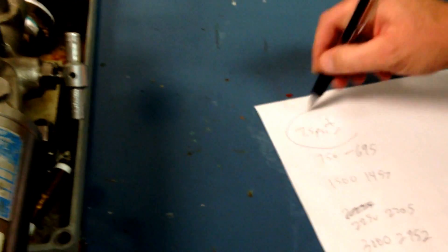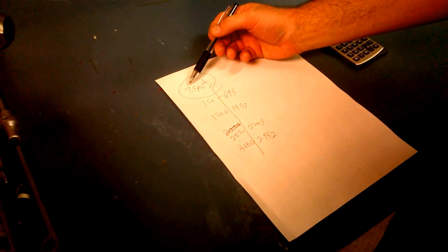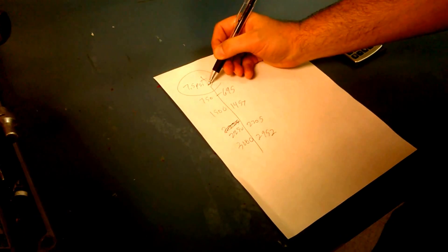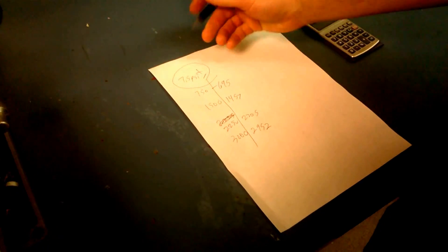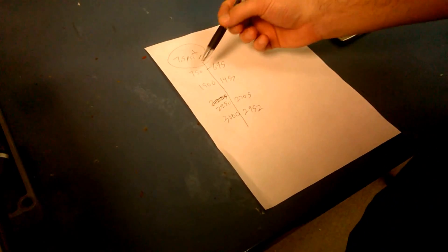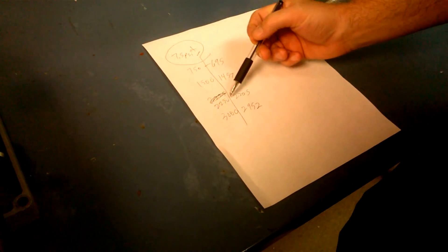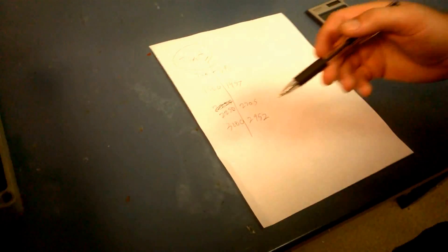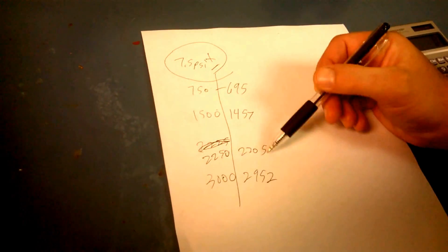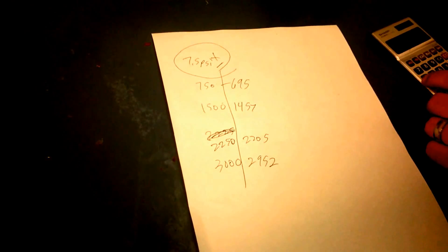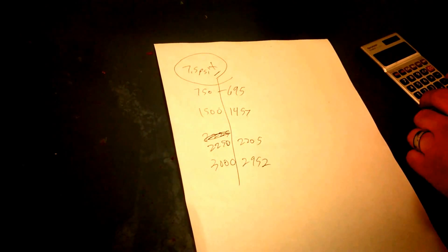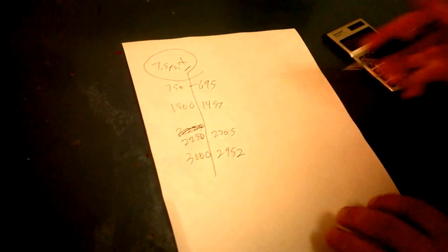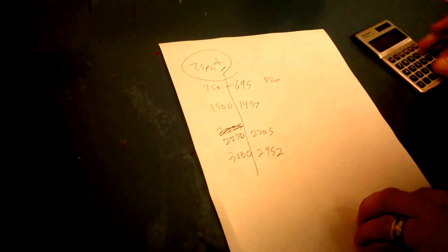So, if you look at my sheet of paper over here, here's our tolerance, plus or minus 7.5, that's our tolerance. How far off it can be at any reading. Here's the test points, 750, 1500, 2250, and 3000. Now here's what we actually got. So 695 is, that's 55 low. Way out.